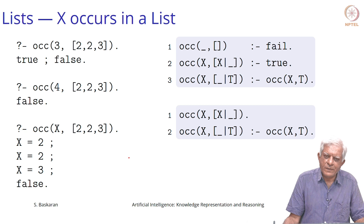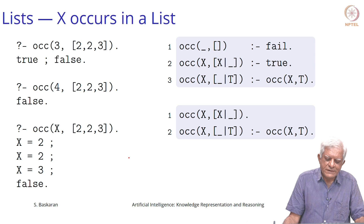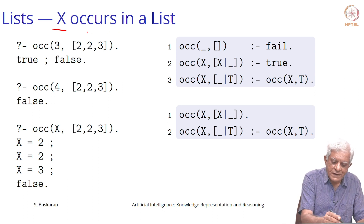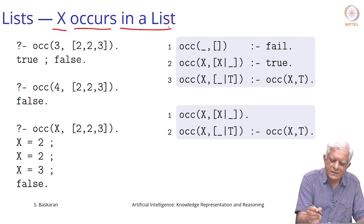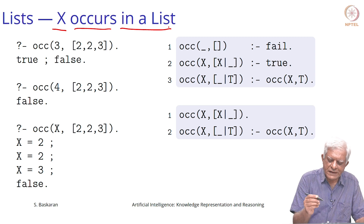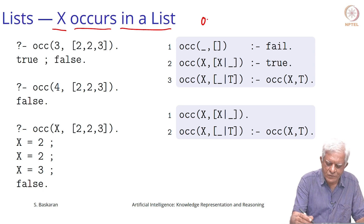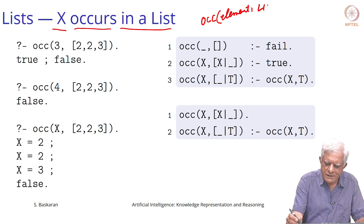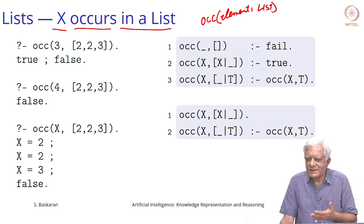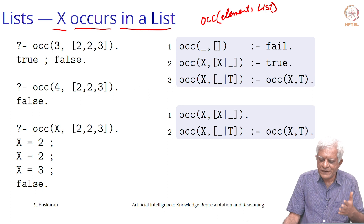We are back and we have been looking at this Prolog small program which is used to determine whether an input argument x occurs in the list which is the second argument. So this 'occurs' has a schema of two arguments: element and list, and it looks for the element in the list, and if it finds it, it returns true.